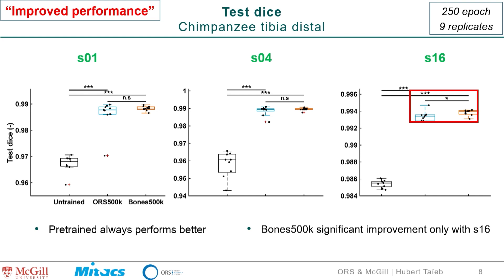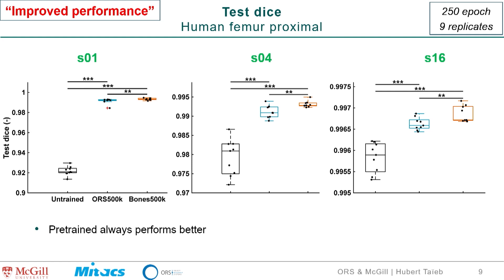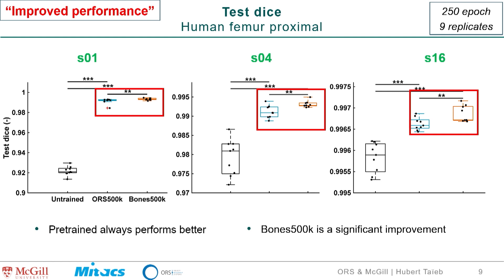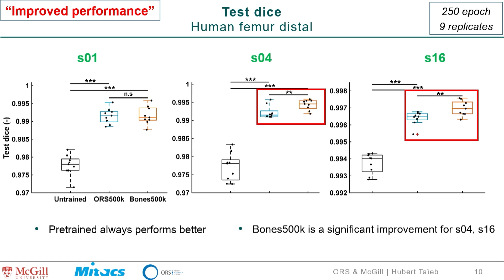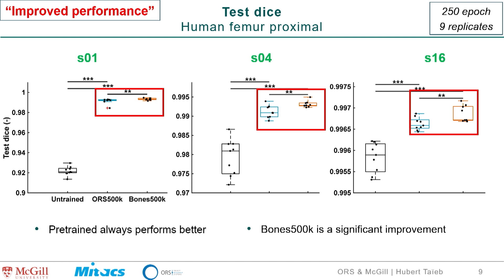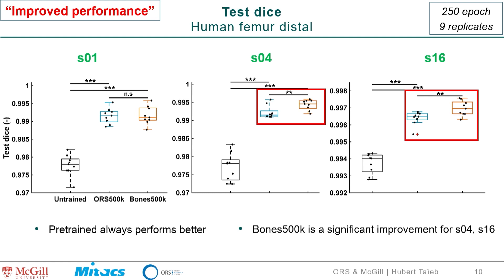For the human femur proximal dataset, same thing — the pre-trained always performs better, and Bone500K is better for middle or high training data set sizes. For another example, it was actually better across all different training data set sizes. The point is it depends a lot on your dataset and the images in your training. But systematically, we get improved performance when using a pre-trained model — with no cost to the users. You just get those models already loaded into Dragonfly in a new release and can just train them.